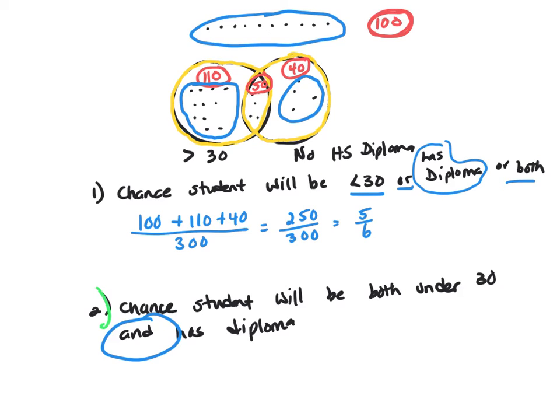Chance one student will be under 30. That's going to be these guys out here and has diploma. It will not include anybody in here because these people are greater than 30 and they don't have a high school diploma. So that's going to be 100 over 300 or 1 to 3.